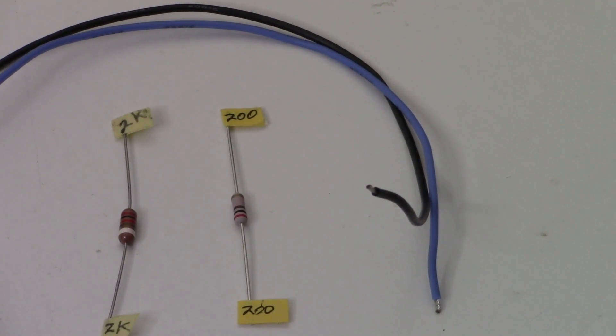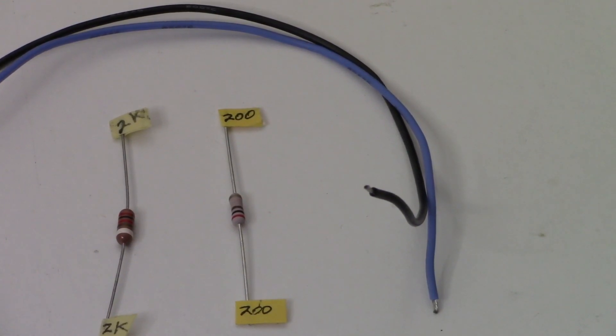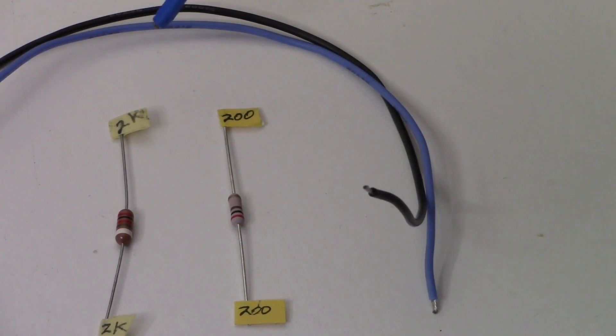The only other things we're going to use as part of this little project are these two resistors. This is a 2k ohm and here's a 200 ohm. These happen to be one watt values each. I suppose you can use quarter watt values if you want to. This is not by any means a permanent piece of the circuit.